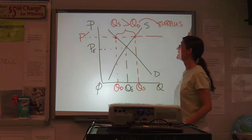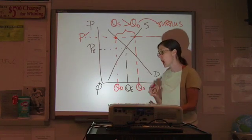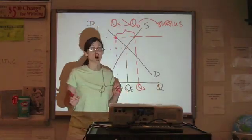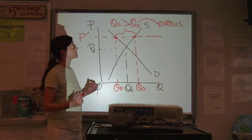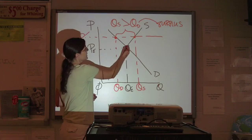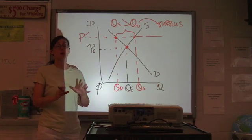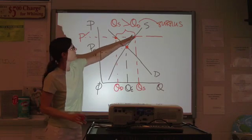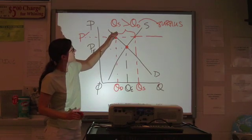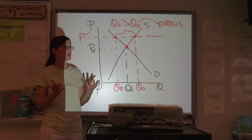A surplus means that your price is too high. If your price is too high, then naturally, if the price is allowed to adjust based on market forces, you would expect that price to come down until it hits the equilibrium. So, a surplus—price is too high, quantity supplied greater than quantity demanded—you would expect downward pressure on price.